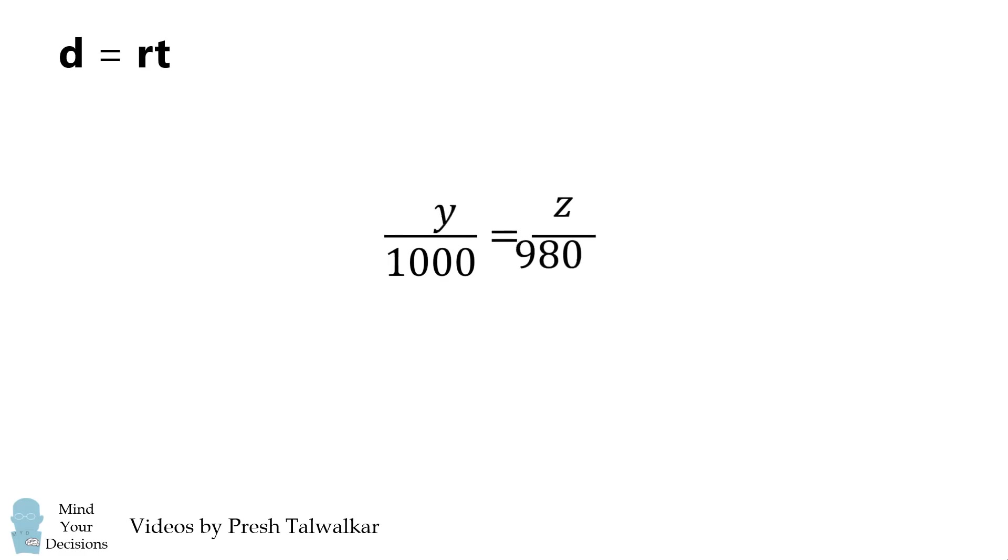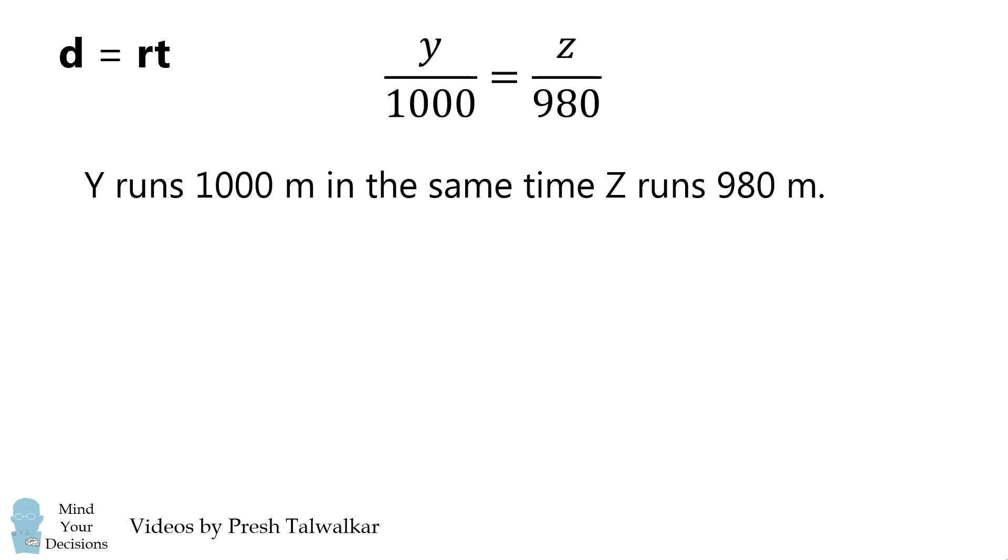We'll then exchange the 980 and the Y to get Y over 1000 equals Z over 980. This means Y runs 1000 meters in the same time Z runs 980 meters. 1000 minus 980 equals 20, and thus we get the answer that Y has to give a 20 meter start to Z.